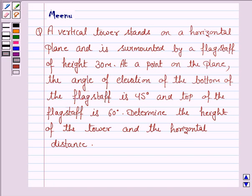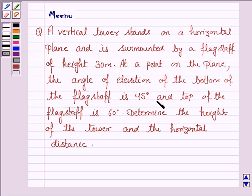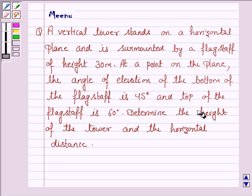Hello students, let's work out the following problem. It says a vertical tower stands on a horizontal plane and is surmounted by a flagstaff of height 30 meters. At a point on the plane, the angle of elevation of the bottom of the flagstaff is 40 degrees and the top of the flagstaff is 60 degrees. Determine the height of the tower and the horizontal distance.